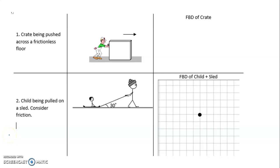In this video I'm going to draw free body diagrams for the two situations you see pictured and described here. The first one's actually already done for you in your note packet. It's a crate being pushed across a frictionless floor.